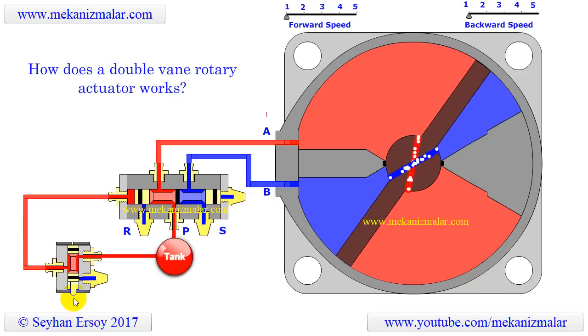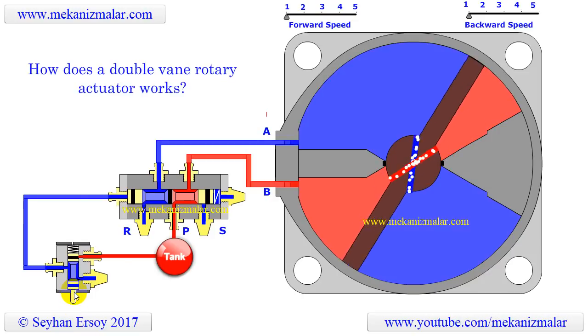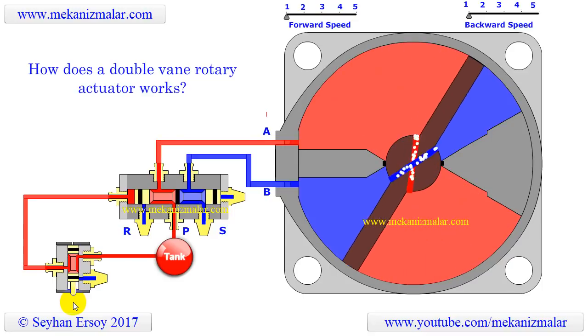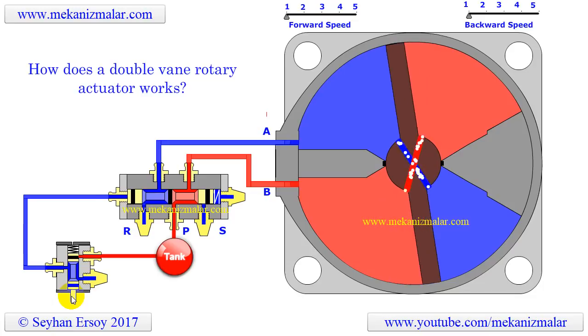Notice how the pressurized fluid, shown here in red, and the tank flow, shown in blue, are moving from one chamber to the other through these channels when the vane is rotating clockwise and counterclockwise.